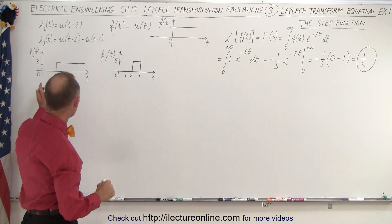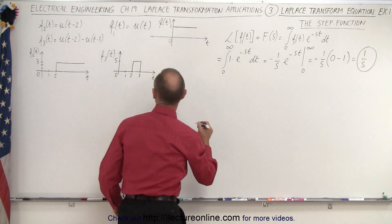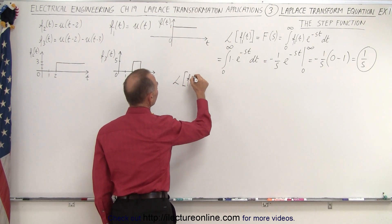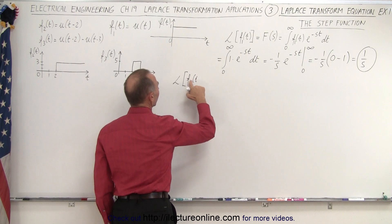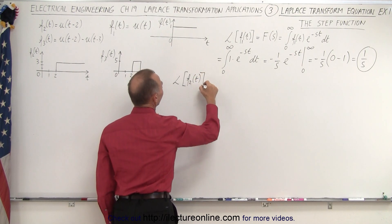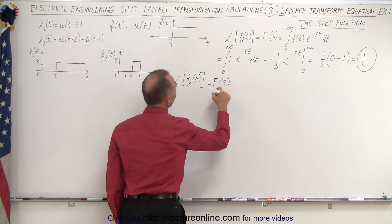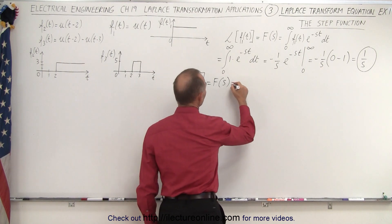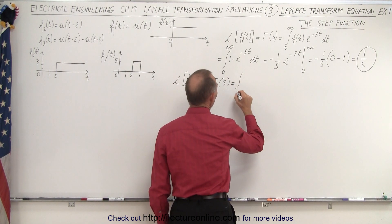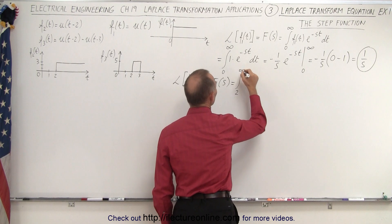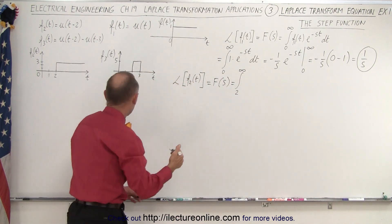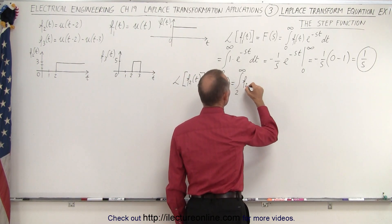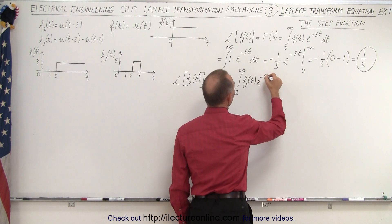Now let's try our second step function with things moved two units to the right. So we have the Laplace transform of the second function, which is equal to F(s). That will be equal to the integral from two to infinity — there's no point in integrating between zero and two because the function is zero there — so we start from two to infinity of f₂(t) times e to the minus st dt.